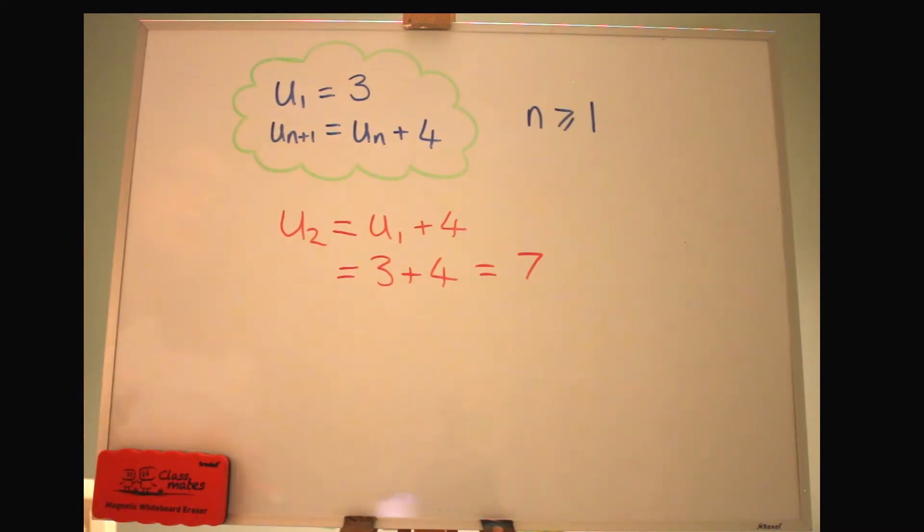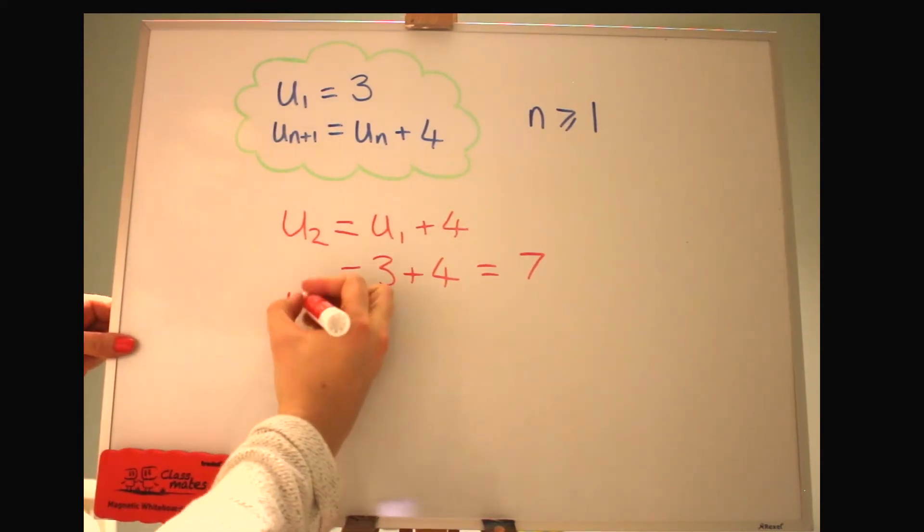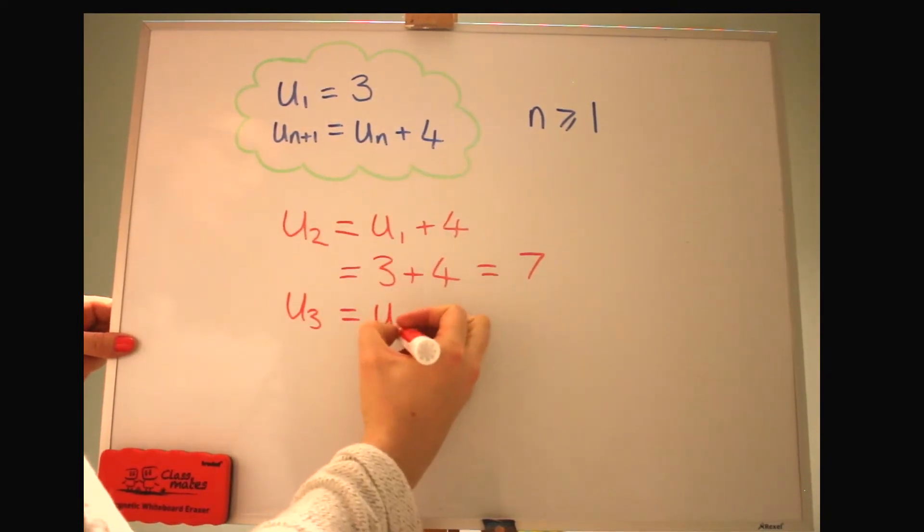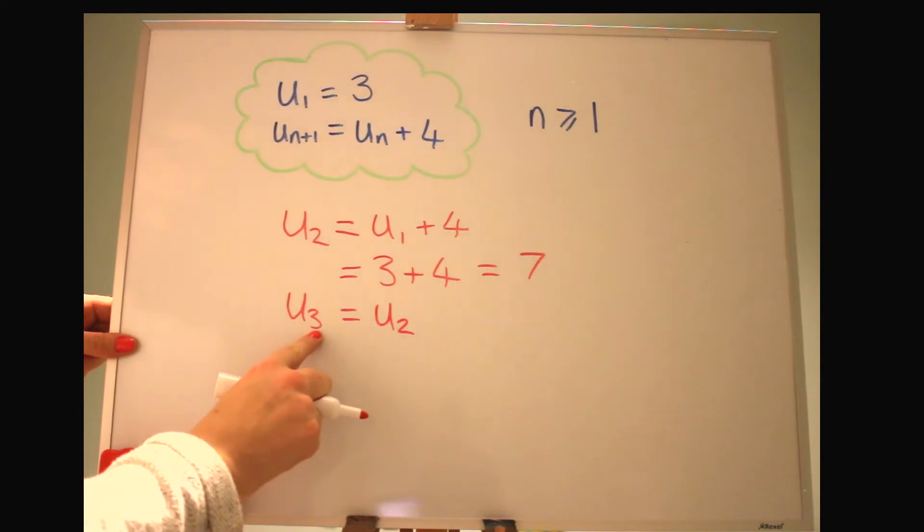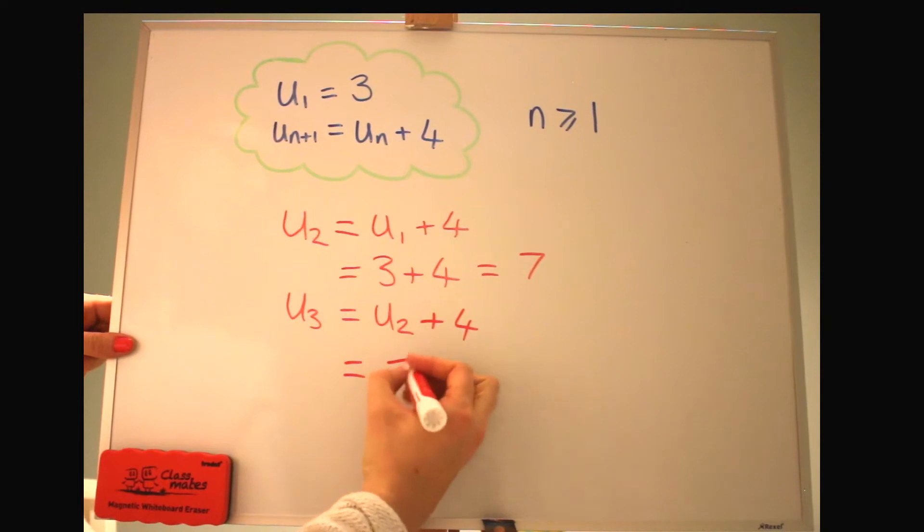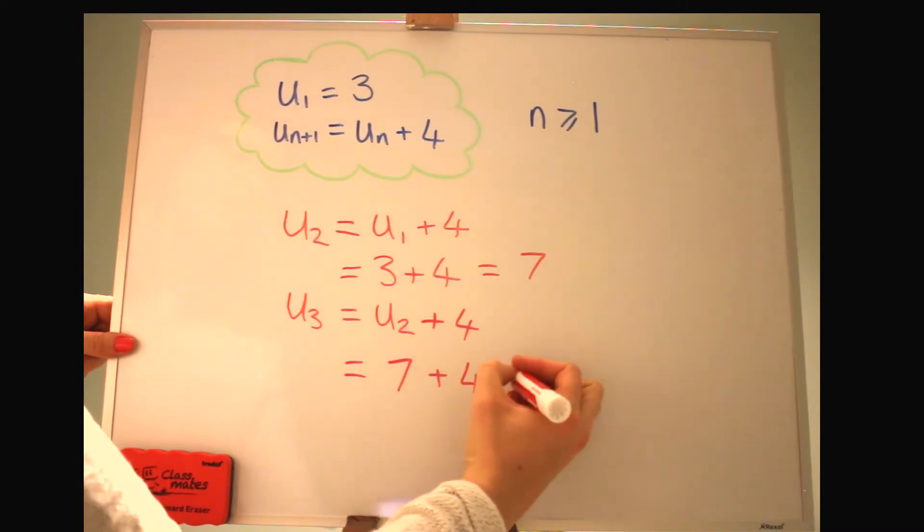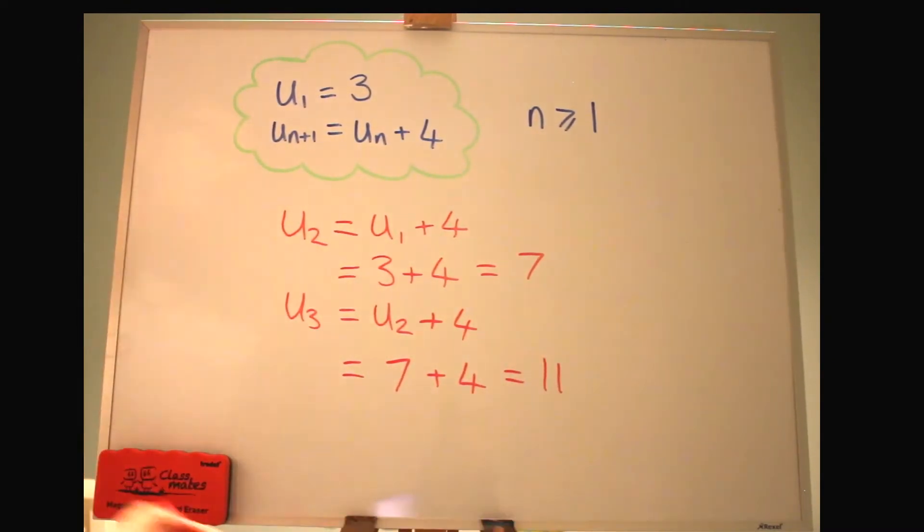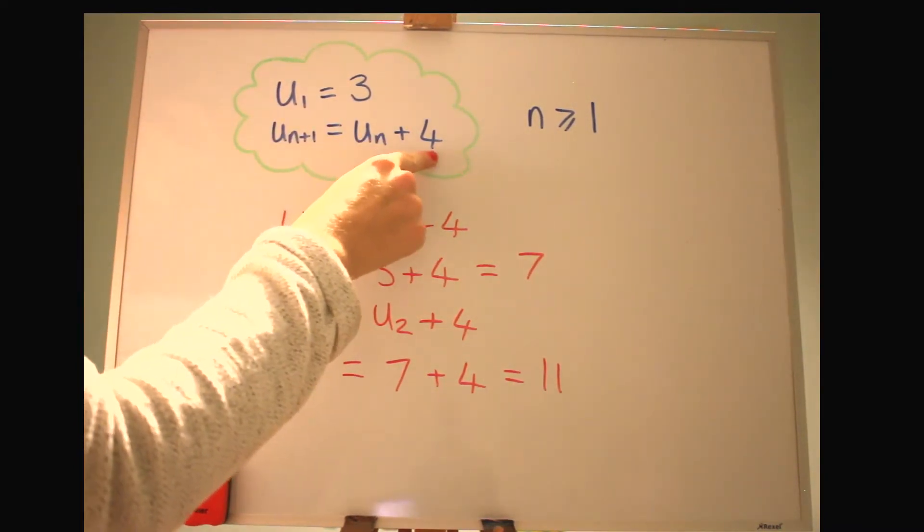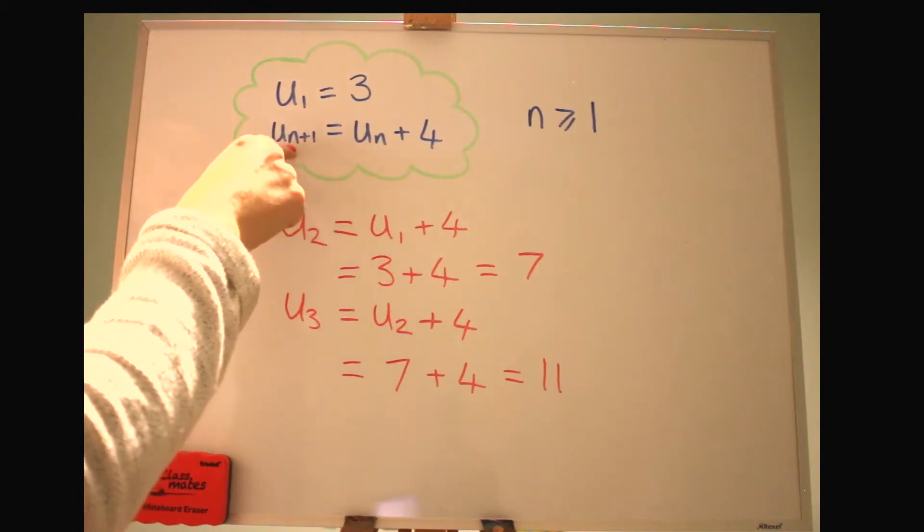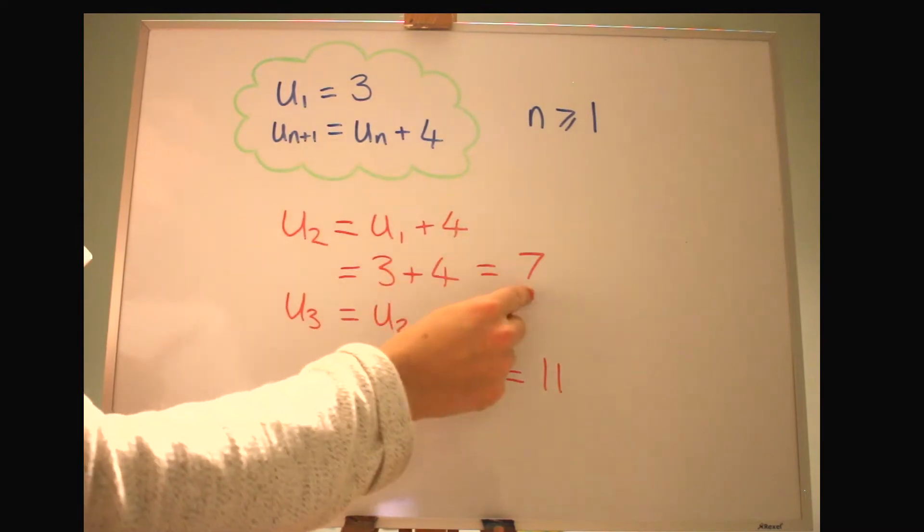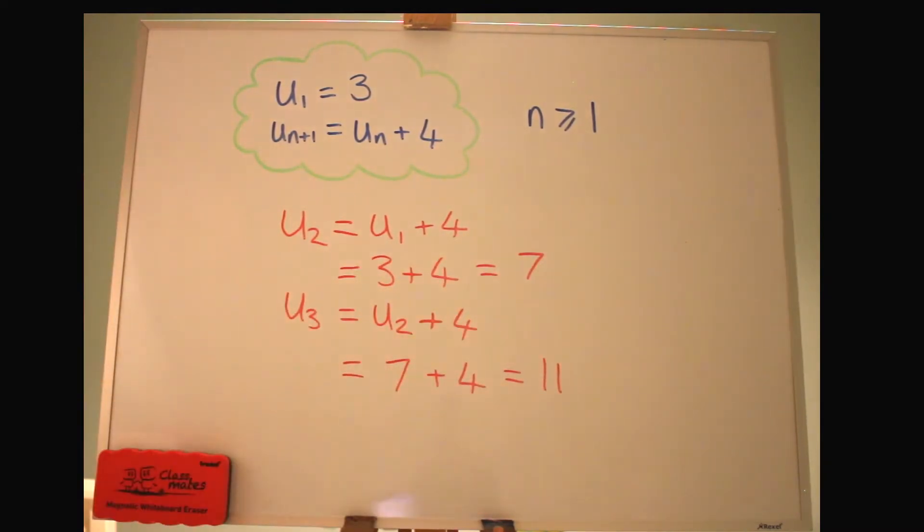Let's walk through another one to get u3. u3, the third term, that would be when n is 2, so that n plus 1 is 3, and we're adding 4 still. So u2 is 7 and plus 4 is 11. It's probably easy to see that this is just saying take the previous term and add 4 to it in order to get the next term along. So you keep adding 4. So the sequence goes 3, 7, 11, and the next one will be 15.